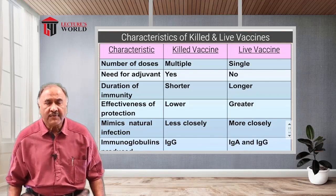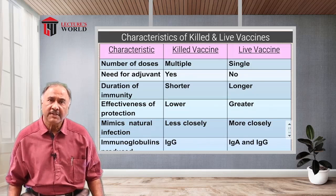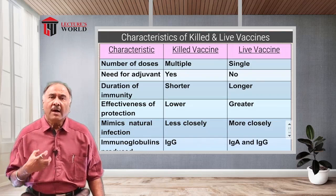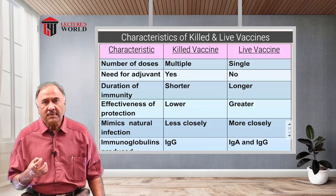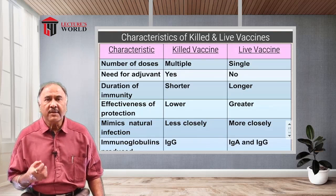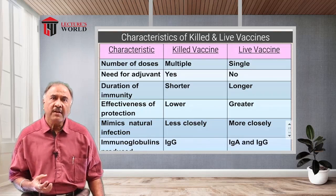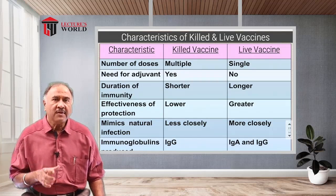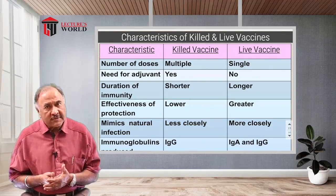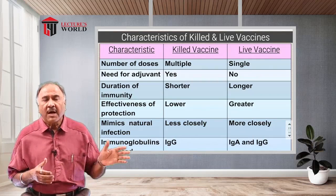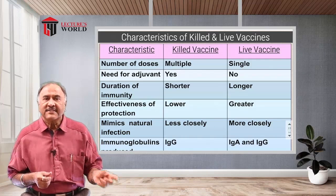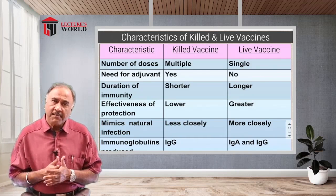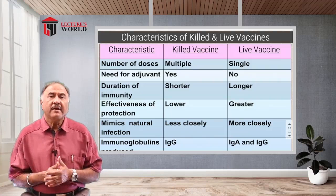The reason is simple: since live vaccines contain living organisms, they can multiply in the body of the host, maintaining a particular level of organisms constantly for several days. In the case of killed vaccines, because the organisms are killed, they have lost the ability to multiply. Therefore, after a certain number of days, a second dose is required — and in some cases, multiple doses at regular time intervals.